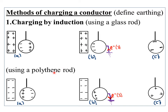A similar experiment can be carried out using a polythene rod. Remember, a polythene rod is used in electrostatics to obtain negative charges. The procedure is exactly the same: you bring the polythene rod closer to the conductor but not touching. Because the rod is negatively charged, the positive charges within the conductor are attracted to the side closer to the polythene rod, while the negative charges are repelled to the further end.